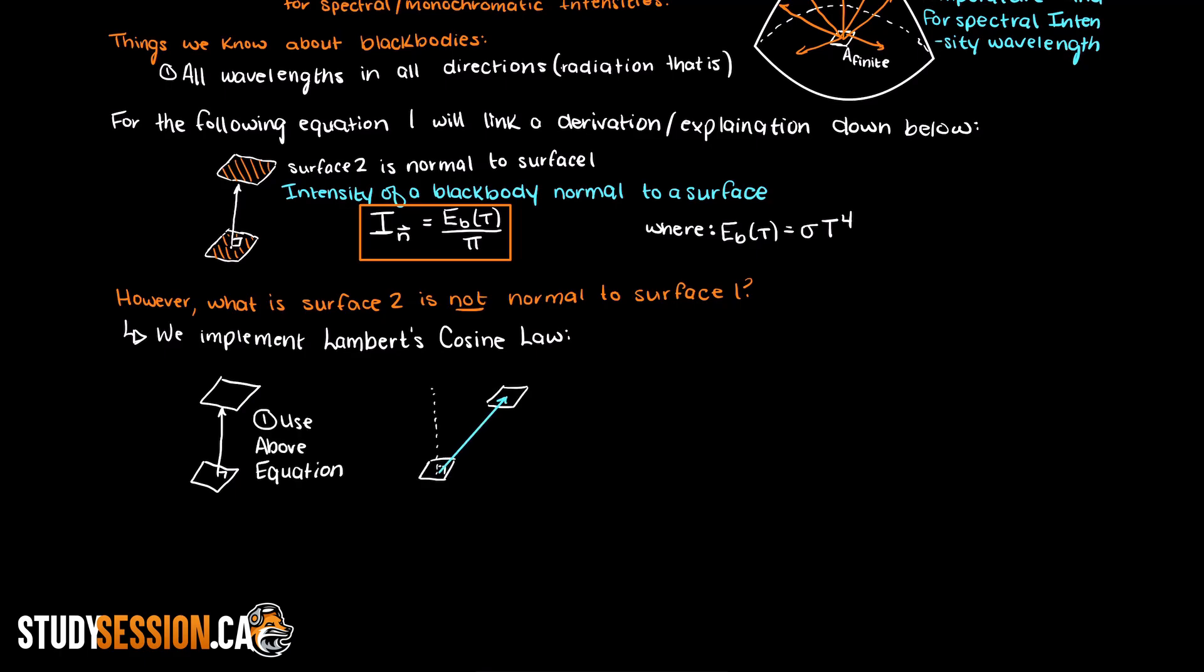We can find the intensity of radiation in any direction as it will be proportional to the cosine of the angle of interest. So we represent this mathematically as the emissive power of our black body times the cosine of our angle over pi.